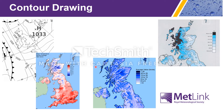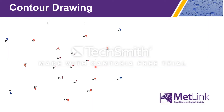How do you go about creating a contour map from a set of observations? Let's start with a simple temperature map. You can see that the warmest temperatures are in the centre of the map and it gets progressively colder as you go towards the edges.